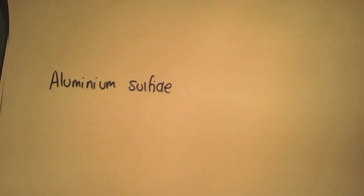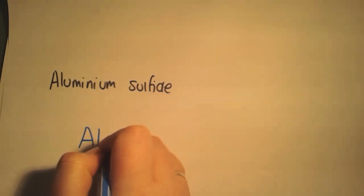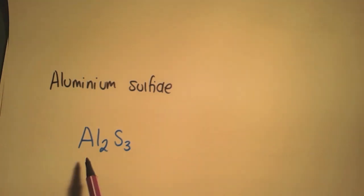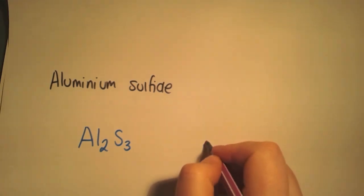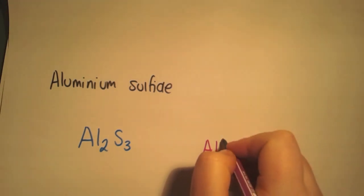Looking at aluminum sulfide, write the chemical formula using whichever method you're comfortable with, and you should end up with Al2S3. And it's the same process: aluminum is a metal so it'll become positively charged. However, it's in group three so it'll be 3+.